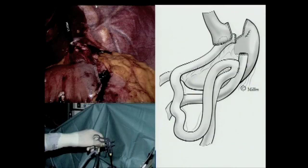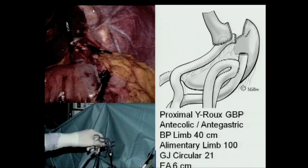Proximal Roux-en-Y gastric bypass. We do not believe in malabsorptive, antecolic, antegastric procedures. The alimentary limb is 100 centimeters, with a 21mm circular stapled anastomosis, and an anterotomy closure of six centimeters.